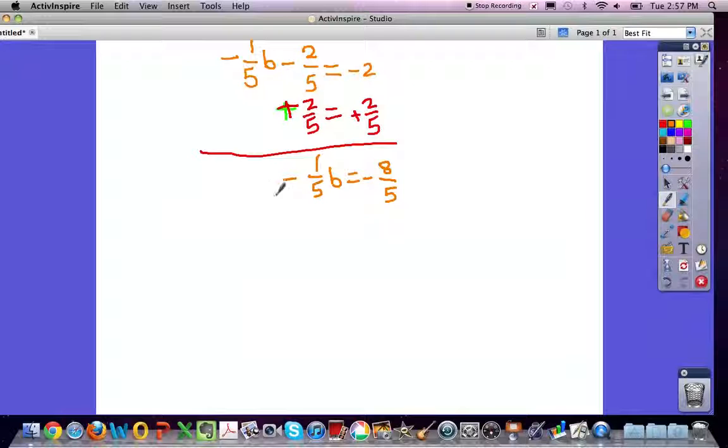Since negative 1 fifth cannot be subtracted, what we first have to do is isolate the variable. So we have to do negative 5 over 1 times negative 1, which is just b. And negative 8 fifths times negative 5 over 1 because of the property of equality.